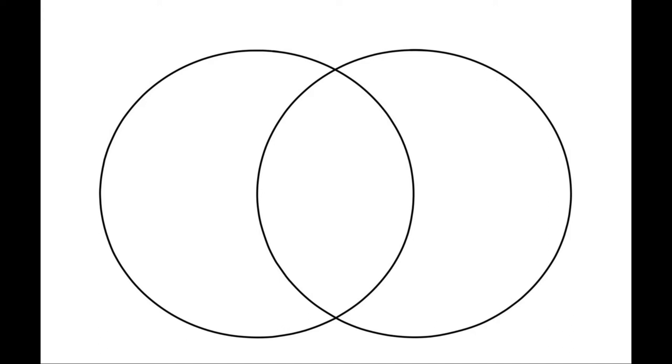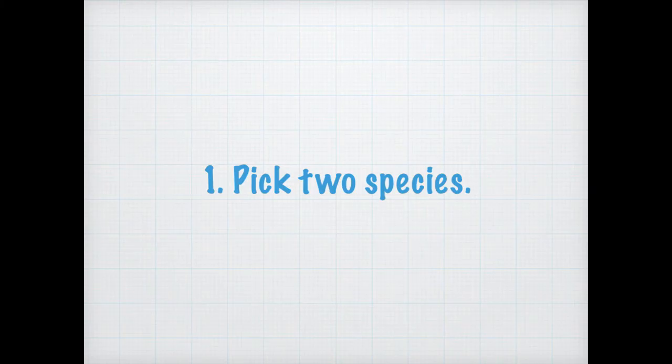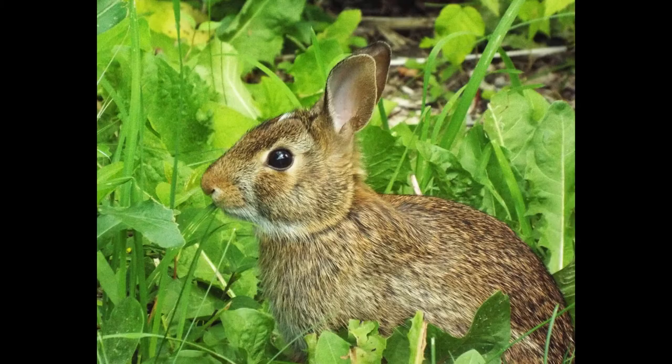I'm going to give you three steps for making your own Venn diagram. The first step is to choose two different organisms to compare and contrast. You can choose two animals of the same species, but for beginners with Venn diagrams, it's best to use two different types of organisms.